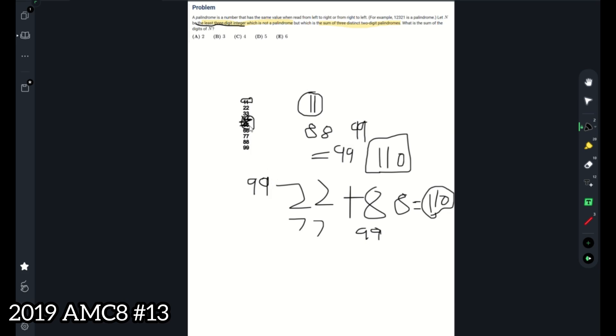We're trying to find the least one so we can add 11. So the sum of the digits of n. The sum of the digits of n is 2, because our answer is 110, in which 1 plus 1 plus 0 equals 2. So the answer is A, 2.